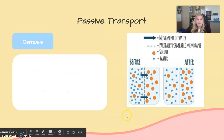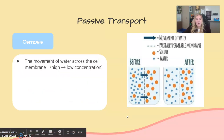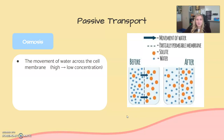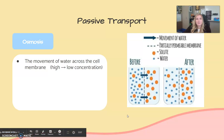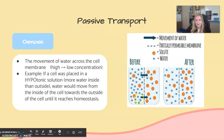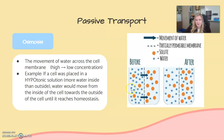Finally, we have osmosis — specifically the movement of water across the cell membrane from high concentration to low concentration. All three passive transport types move from high to low concentration. Osmosis is specifically about water molecules, not solute molecules. For example, if a cell is placed in a hypotonic solution where there's more water inside than outside, the water will move toward the outside of the cell until homeostasis is reached.